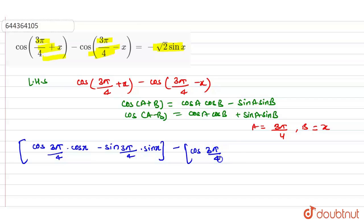3π/4 cos x plus sin a sin b, so sin 3π/4 into sin x.